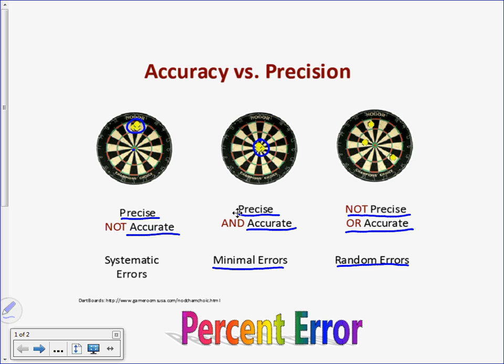Systematic errors, like this one where you're precise but not accurate, that's either the human measuring incorrectly every single time the same way, or the tool that you're using is not calibrated properly, like the balance. For some reason, the balance is way off, and it's way off every time. That's what we talk about when we're talking about systematic errors.